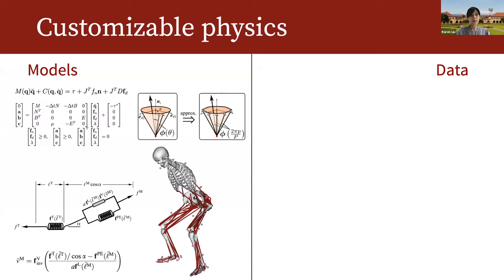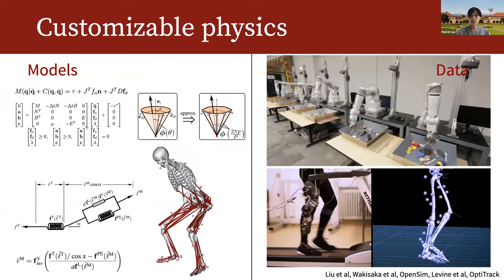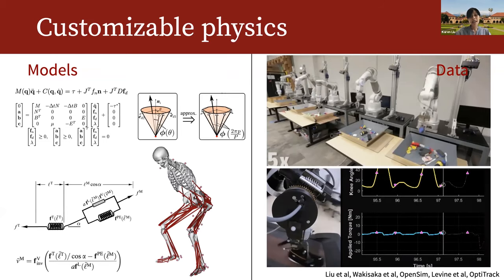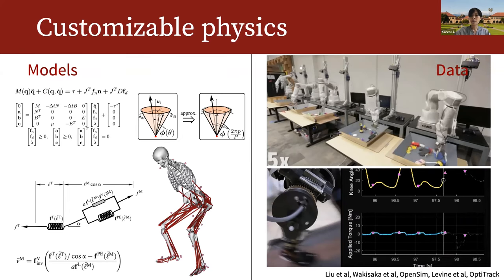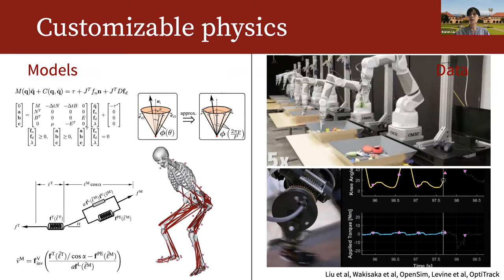Computer animation researchers can produce ultra-realistic visualization of physical phenomena — like a plate of soba noodles. But today's simulators cannot predict a particular scene in the real world, such as a particular robot manipulating a pot to make pasta sauce, because we don't know how to build accurate models for the complex interplay of multiple physical phenomena at the level we can simulate it.